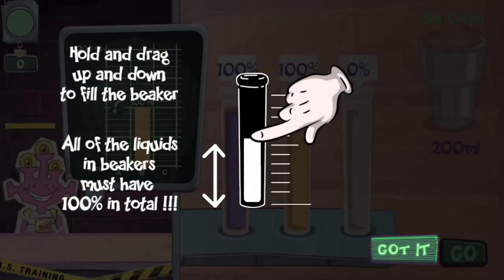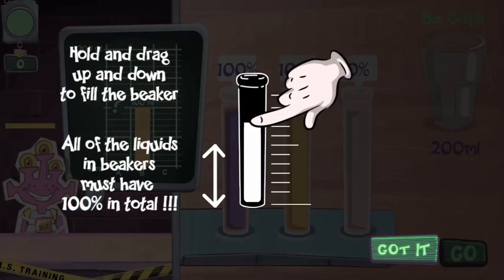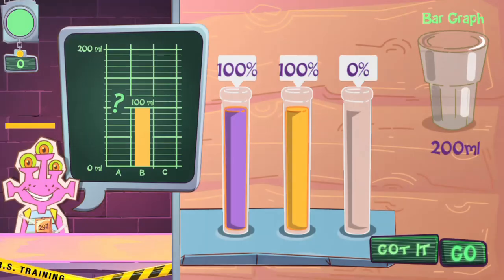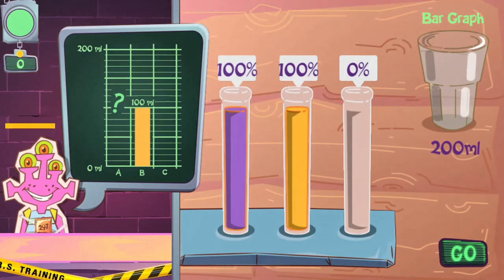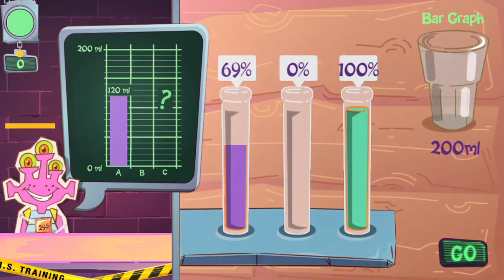You have been employed as a translator at an intergalactical restaurant. Your task will be to serve and represent all your customers' orders in various graph representations. For the pie graph, you will hold and drag from left to right to slice the pieces.